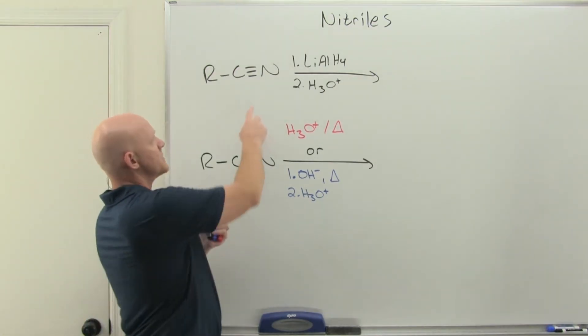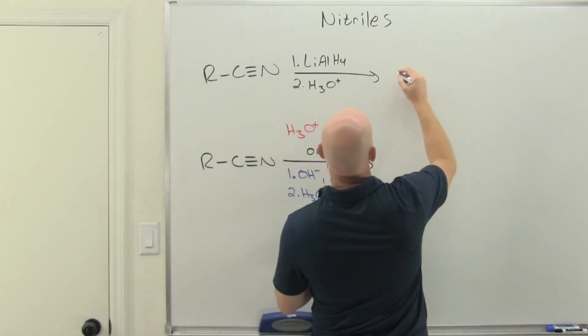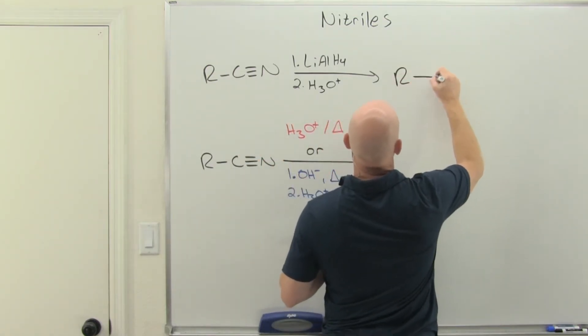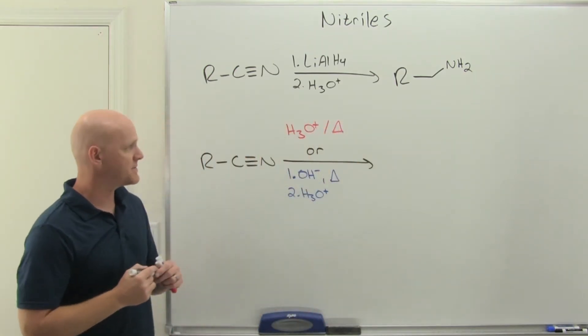You're just going to reduce that carbon-nitrogen triple bond to a carbon-nitrogen single bond and get the corresponding primary amine. From earlier in this chapter.